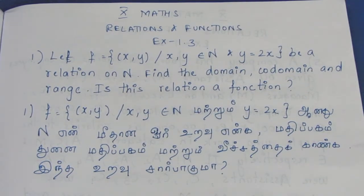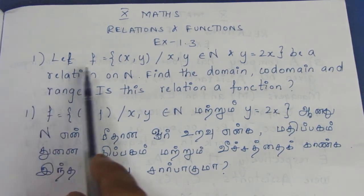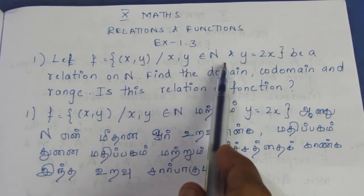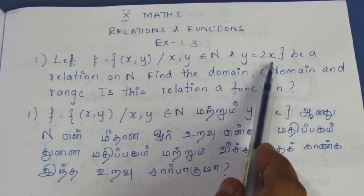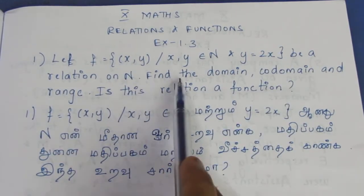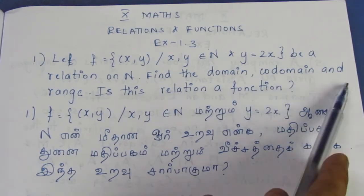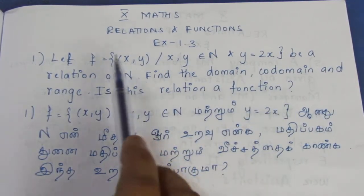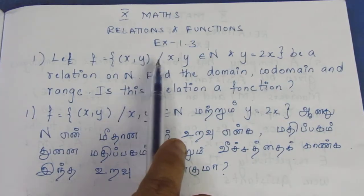Hello, welcome. In the 10th max, Relations and Functions Exercise 1.3, the first sum in the video. Let f = {(x,y) such that x,y belongs to N and y = 2x} be a relation on N. Find the domain, codomain, and range.